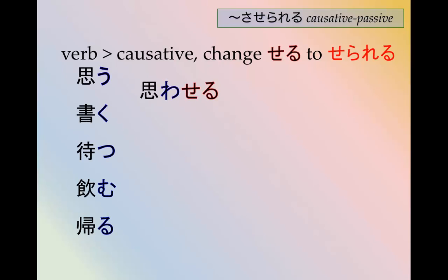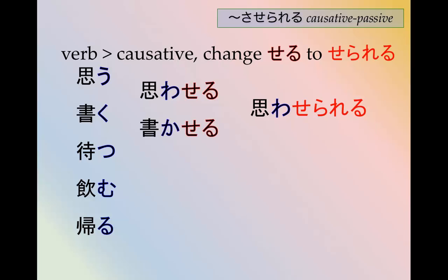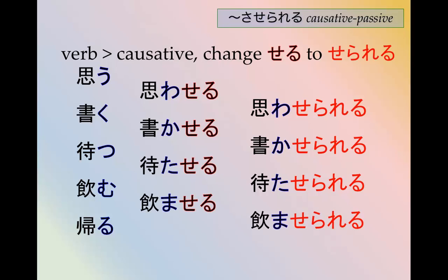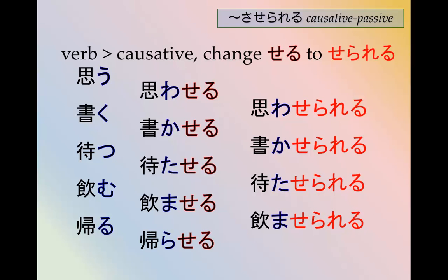U-verbs work the same way. Omou → omoaseru → omoaserareru, 'to be made to think.' Kaku → kakaseru → kakaserareru. Matsu → mataseru → mataserareru, 'to be made to wait.' Nomu → nomaseru → nomaserareru. Kaeru → kaeraseru → kaeraserareru, 'to be made to go home.'